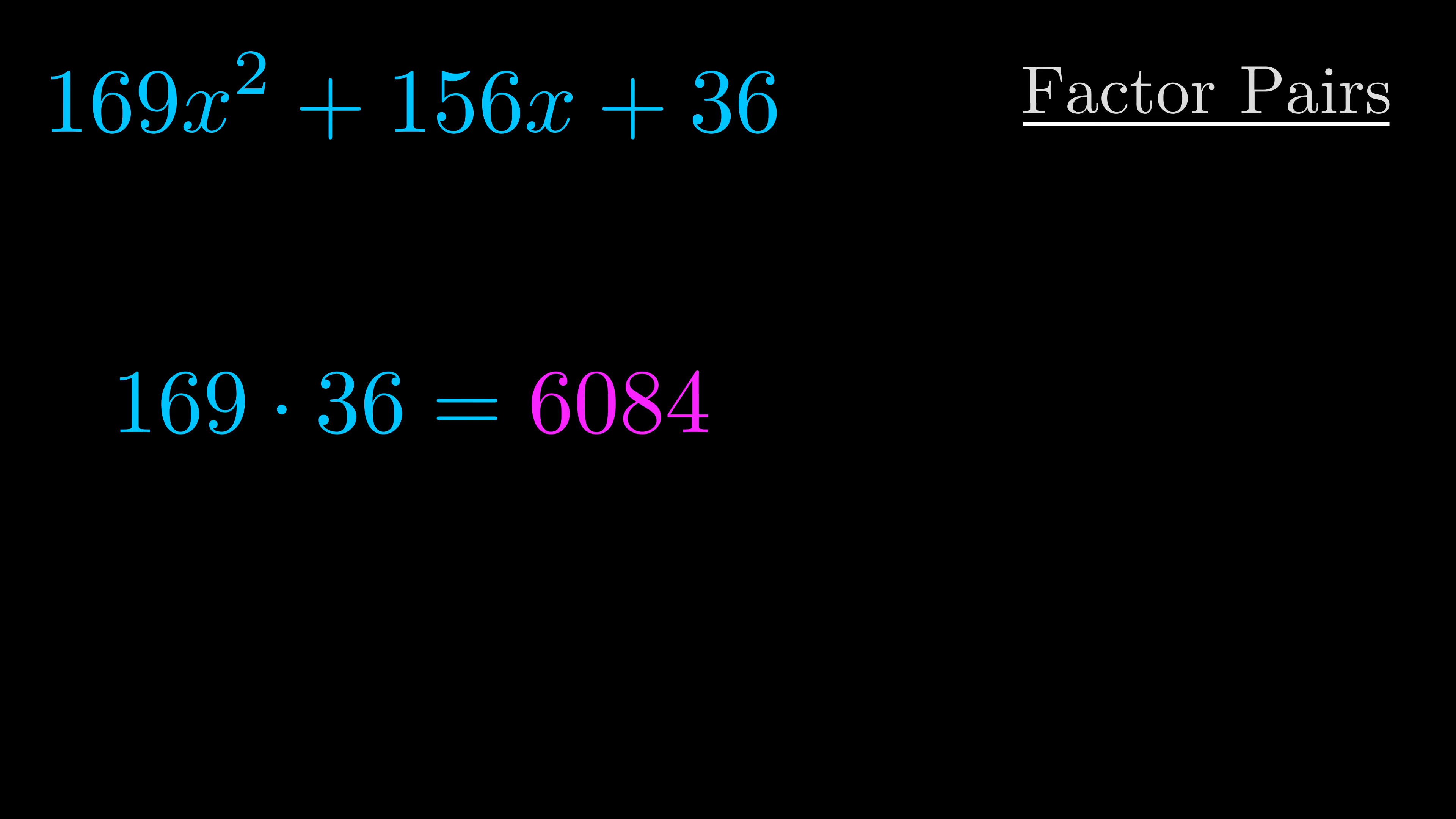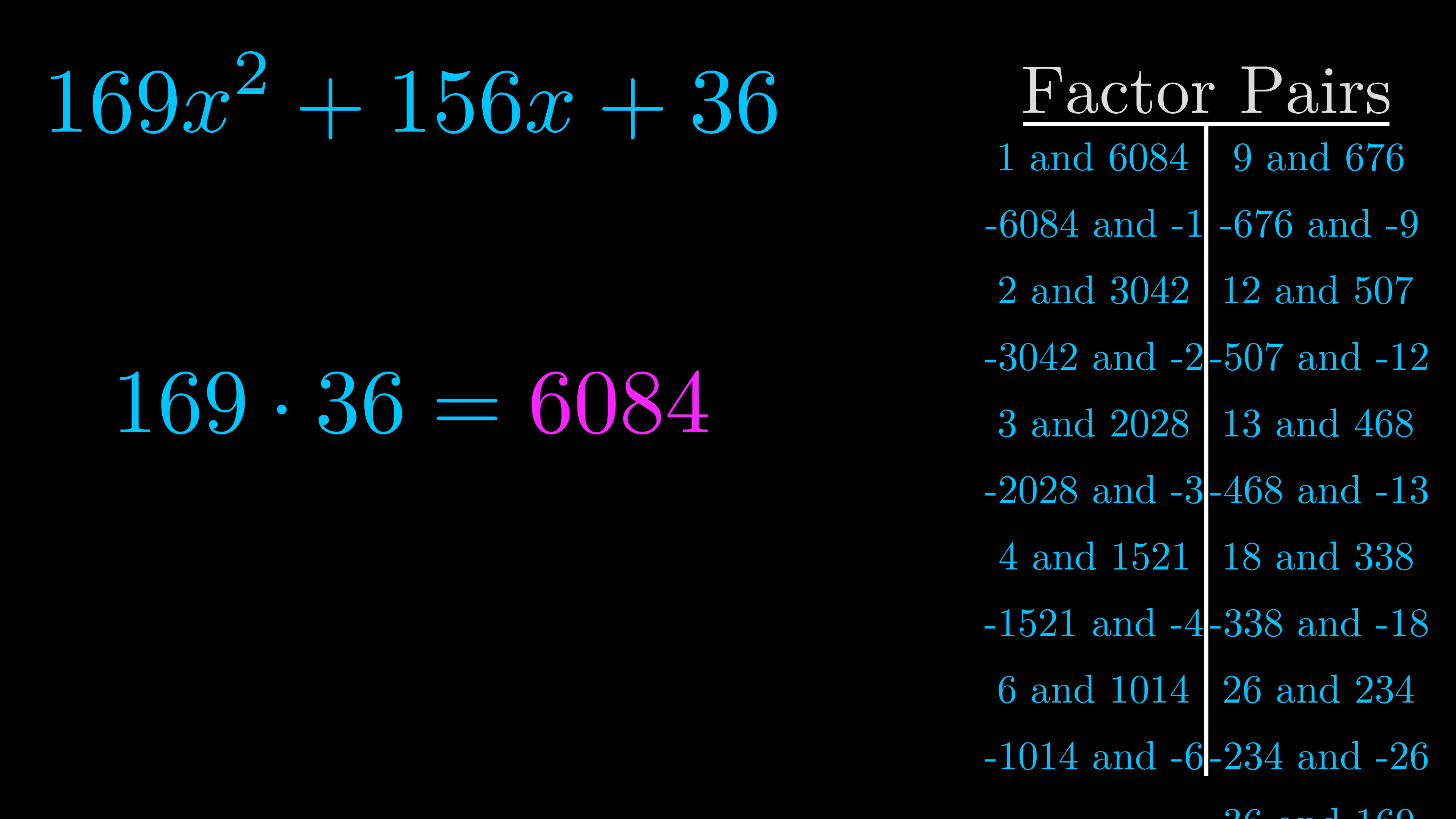Okay here's what I came up with. Now once you have these factor pairs the goal is to find which of these pairs adds to the b value.